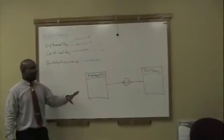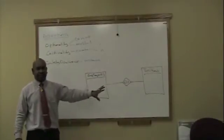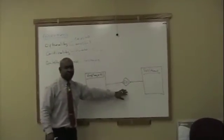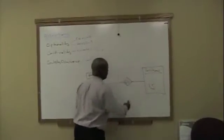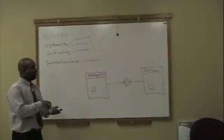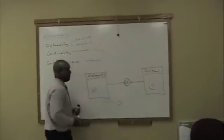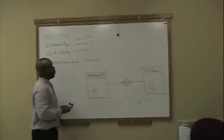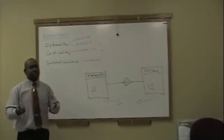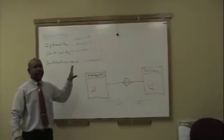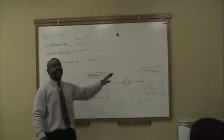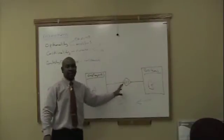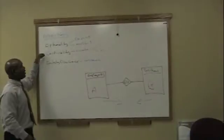What we have here is one relationship and two entities. You have to write an assertion for every relationship, and every relationship will give you two assertions. For example, this is entity A and this is entity B. To get your two assertions, you look at it from entity A to entity B, and then again from entity B to entity A. The assertion always begins and ends with an entity, and the relationship is always in the middle. In between, you put your optionality and your cardinality.